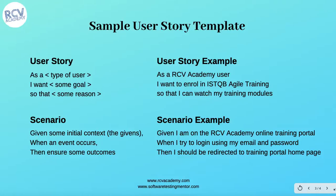A scenario could be something like: given I am on the RCV Academy online training portal, when I try to log in using my email and password, then I should be redirected to the training portal homepage. A second scenario could be: given you are on the RCV Academy training portal homepage, when you try to click on the ISTQB Agile training link, then you should be redirected to the ISTQB Agile training page. These scenarios form the basis of test cases for testers and developers, and form the acceptance criteria for the user story.